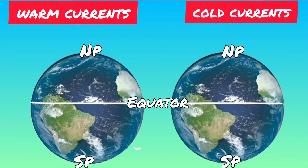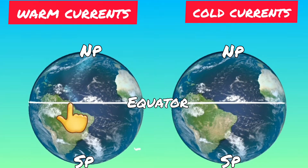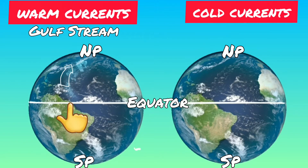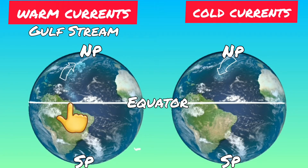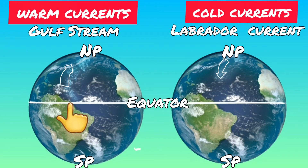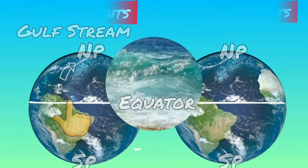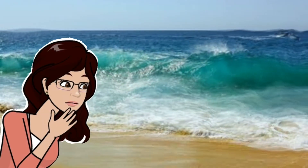Generally, warm ocean currents originate near the equator and move towards the poles — for example, the Gulf Stream, which is a warm current. Cold currents, on the other hand, originate near polar areas and carry water from polar to tropical regions — for example, the Labrador Current.